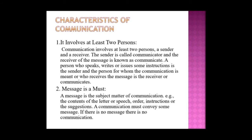Now we will discuss the characteristics of communication. The first characteristic is that it involves at least two persons — a sender and a receiver. The sender is called the communicator and the receiver is known as the communicate. A person who speaks, writes, or issues instructions is the sender, and the person who receives the message is the receiver.